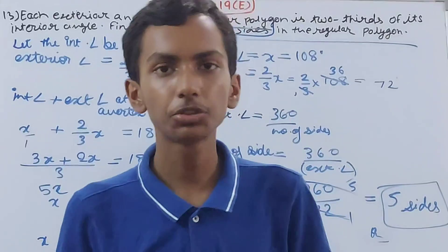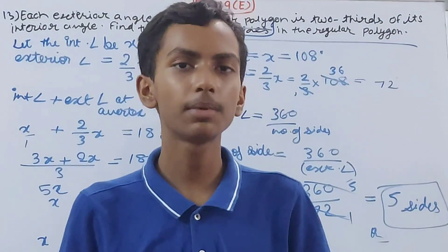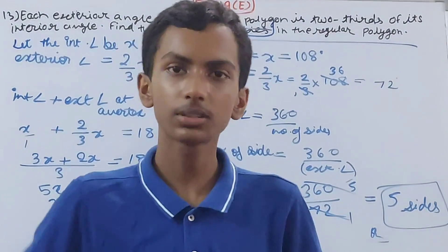There are five sides in this regular polygon. That is the final answer. Friends, this is all for today. If you are new to my YouTube channel, do not forget to subscribe and leave a like. Till then, take good care of yourselves and bye.